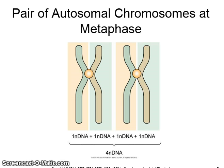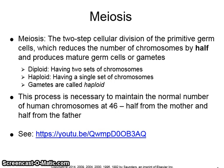This image shows a pair of autosomal chromosomes at metaphase. In meiosis, a two-step cellular division occurs which reduces the number of chromosomes by half and produces mature eggs or sperm. This process is necessary to maintain the normal number of human chromosomes at 46, half from the mother and half from the father. The term diploid means having two sets of chromosomes, haploid means having a single set of chromosomes, and all gametes are haploid. There is a YouTube link that will be helpful — it shows a very nice short animation.